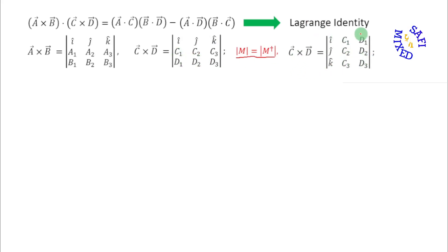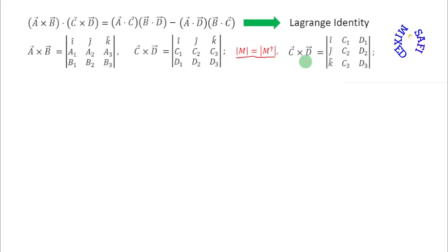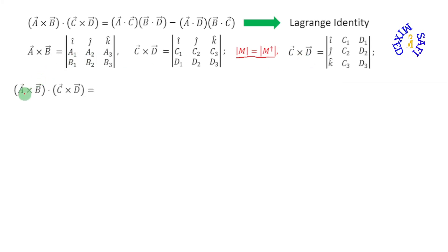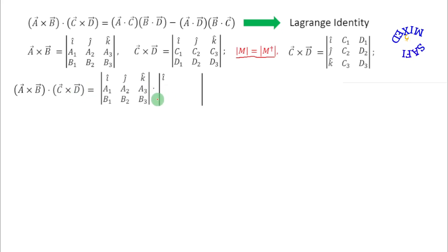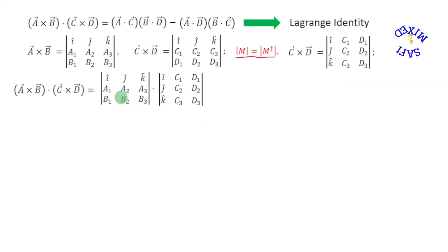Now with this transposed form of c cross d, I can find the vector product a cross b scalarly multiplied with c cross d, and write their corresponding determinants. I place a dot here and then write it in this form.